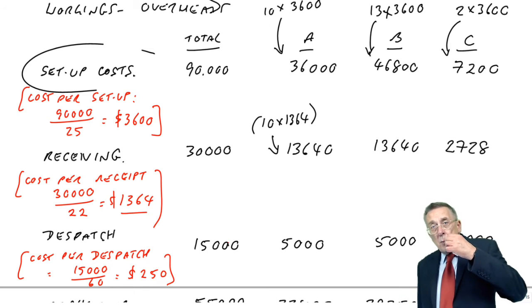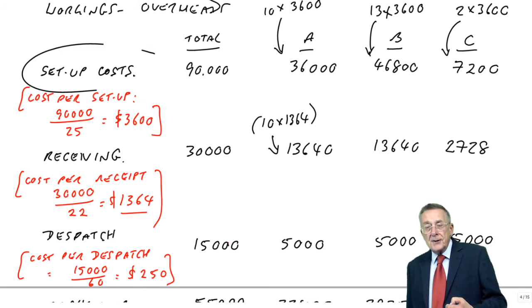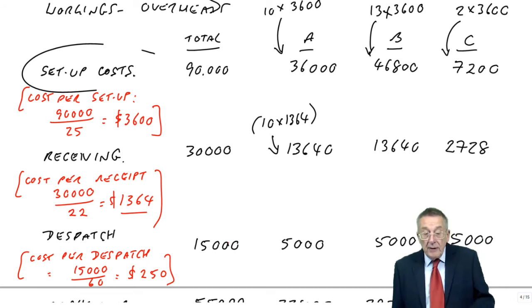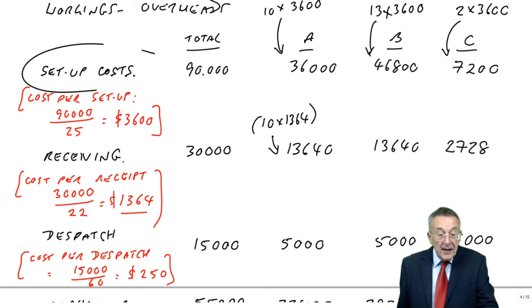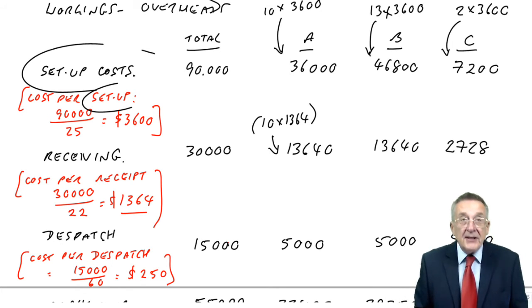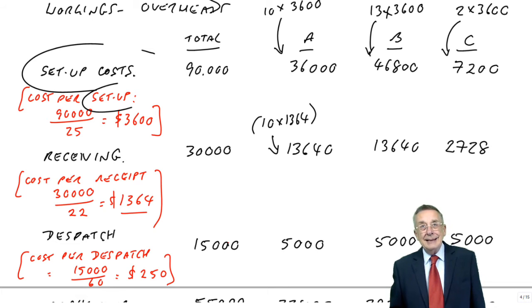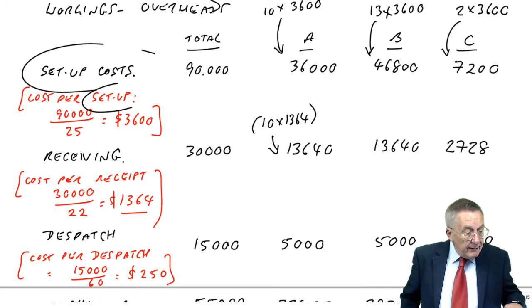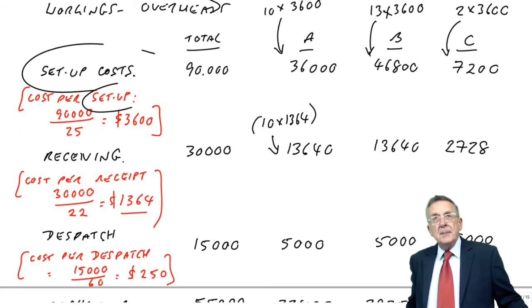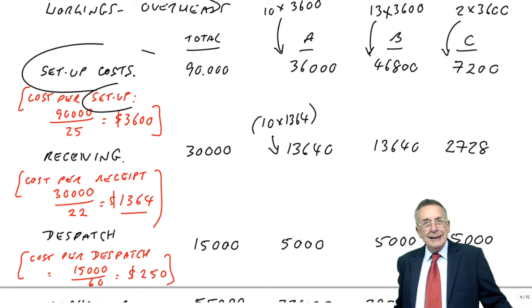So, we're forced to find out where we're incurring the costs, and then we're forced to ask ourselves, why? Why have we got five men setting up machines? It's because of the number of setups we've got. Now, fine, once we've found that, we can say, okay, setups. We are having 25 setups. Why?